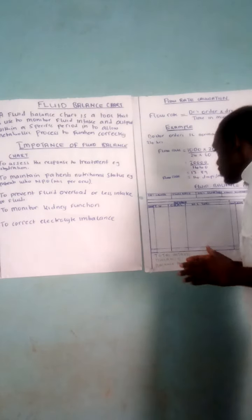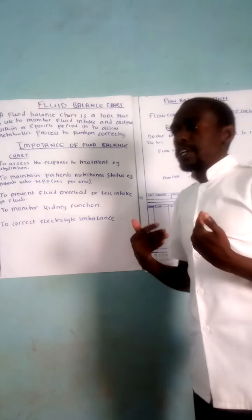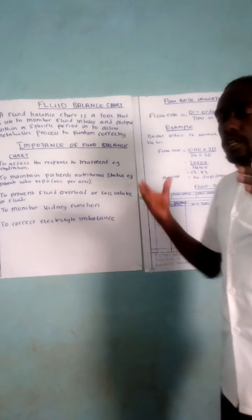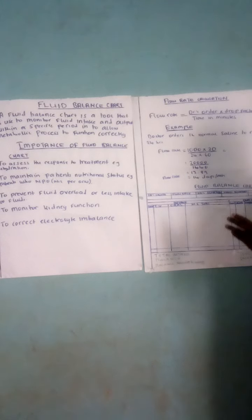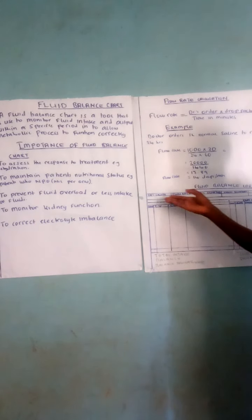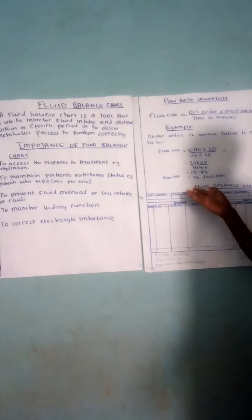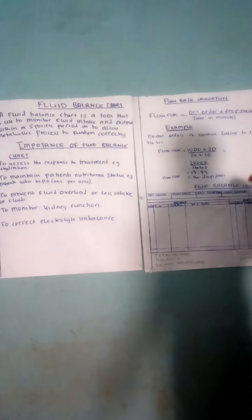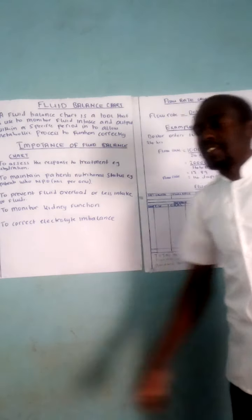Here is a diagram of a fluid balance chart. The format may differ according to different institutions, but ideally this is how a fluid balance chart looks. There is a place to write the amount of fluid ordered, the doctor's orders, the flow rate, the doctor's signature, and the necessary signatures.